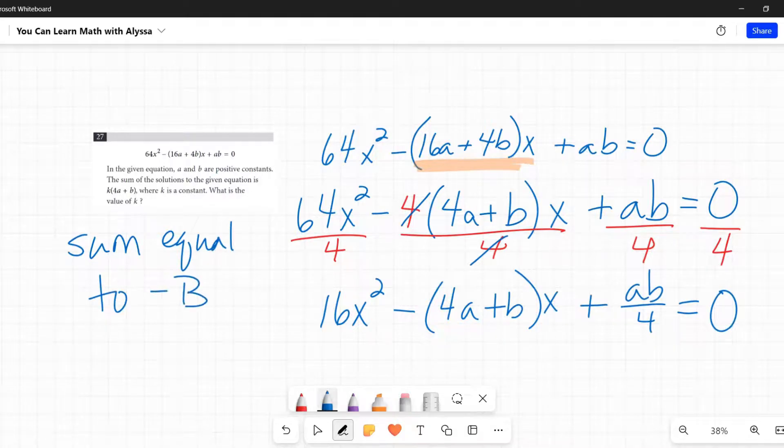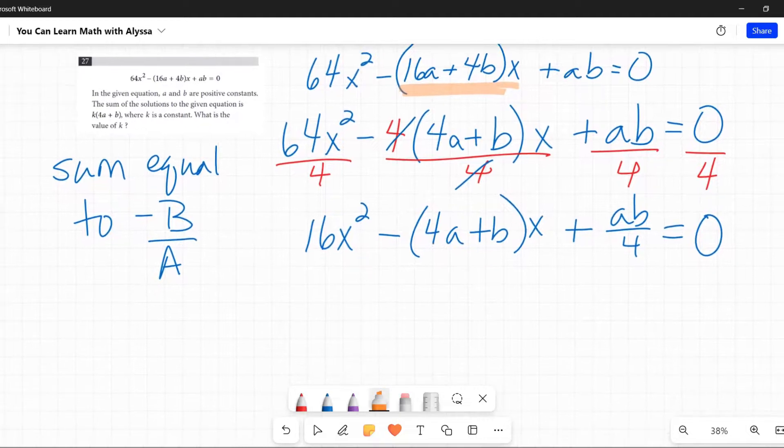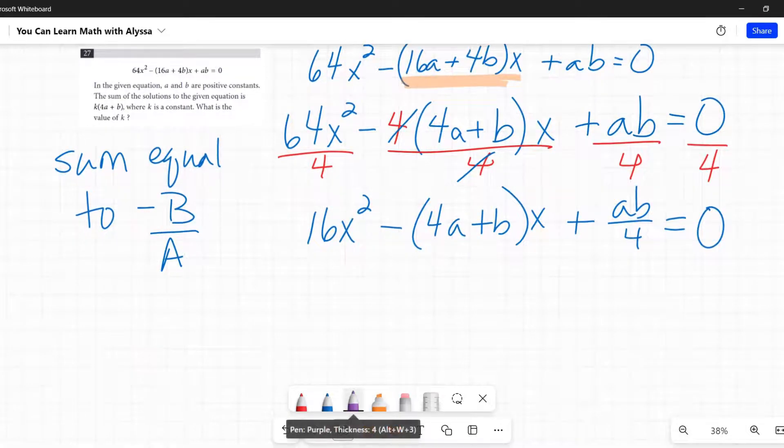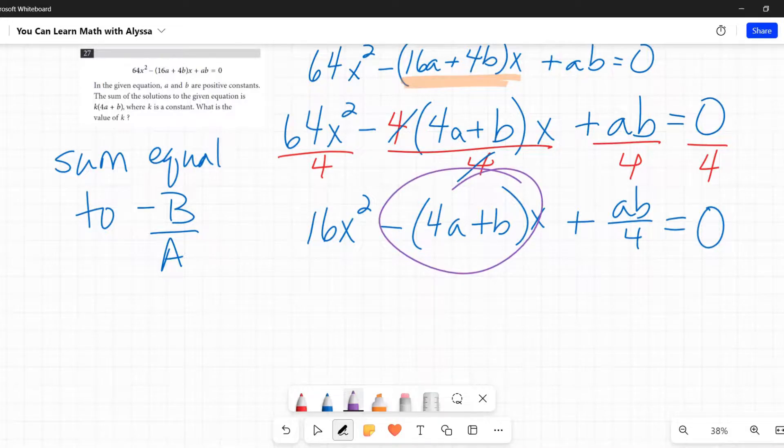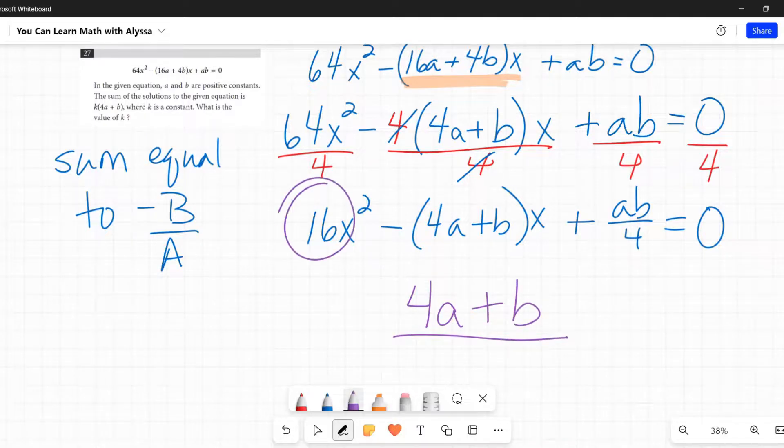And this is the big B, big A. So in this case, B would be -(4a + b), and my A would be 16. Okay, so the sum of the solutions is going to be equal to that. So let's plug those in and see what we get. All right, so -B, well this B is a negative already, so a negative negative makes it a positive, so just 4a + b on top, and the A on the bottom, there's my A, capital A—remember why they picked a and b? Just to make it confusing for the poor students.